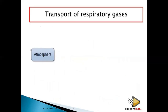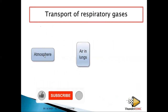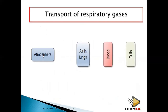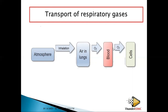Here is a summary of the overall mechanism. You have the atmosphere, the lungs, the blood, and the cells. Air from the atmosphere goes to the lungs, then to the blood, then to the cells. During inhalation, air is drawn into the lungs. Oxygen is taken from the lungs to the blood through diffusion, and then from the blood to the cells through diffusion to carry out respiration.